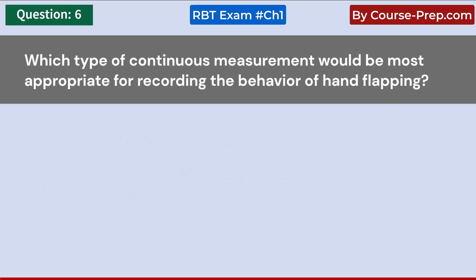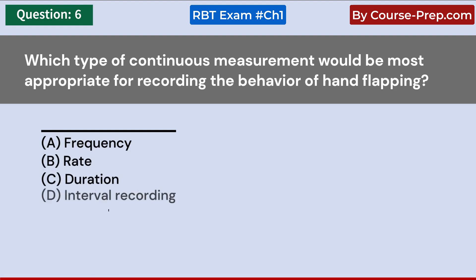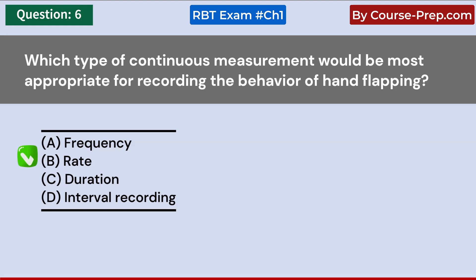Which type of continuous measurement would be most appropriate for recording the behavior of hand flapping? A. Frequency. B. Rate. C. Duration. D. Interval recording. Answer B: Rate.